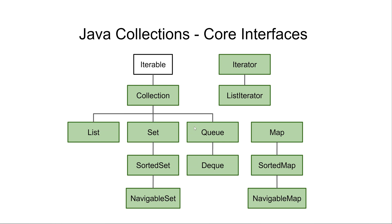Similarly, we have a Queue interface, which also extends the Collection interface. A Queue is a data structure that enables you to enqueue objects at the end of the queue and take them out from the beginning of the queue — just like a queue in a supermarket. Then we have the Deque interface. Deque is an abbreviation for double-ended queue, meaning you can enqueue and dequeue from both ends. That means you can use a Deque as both a queue and a stack.